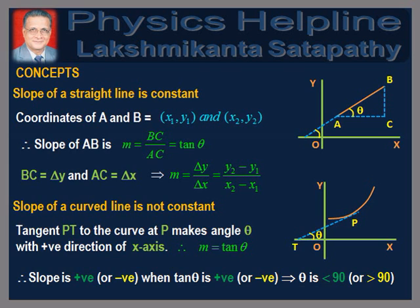Now, AC is equal to change in x, which is equal to Δx, which is equal to x2 minus x1. Therefore, m = tan θ = Δy/Δx = (y2 − y1)/(x2 − x1). Since the angle made by a straight line with the x-axis is constant at every point on it, it follows that the slope of a straight line is constant.